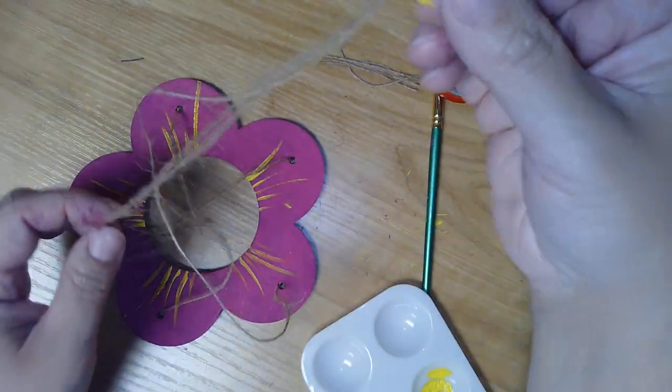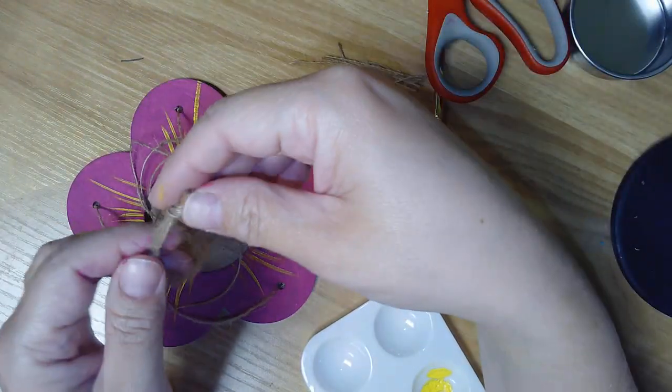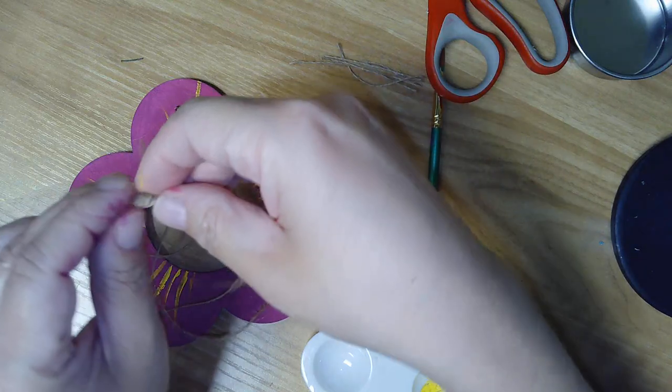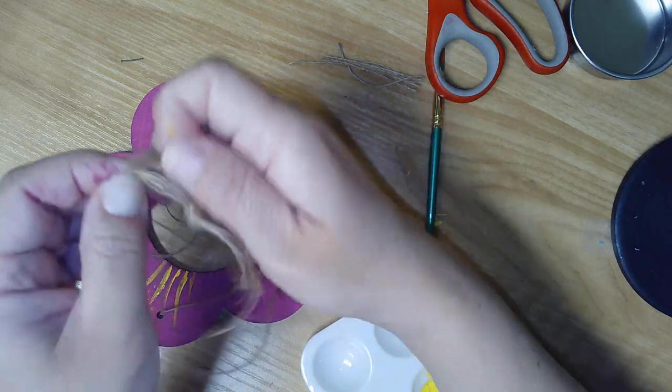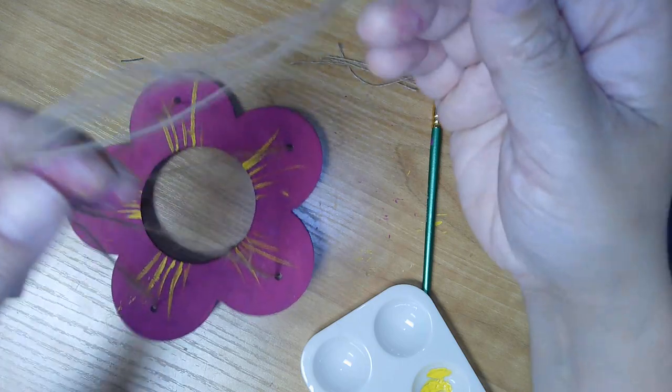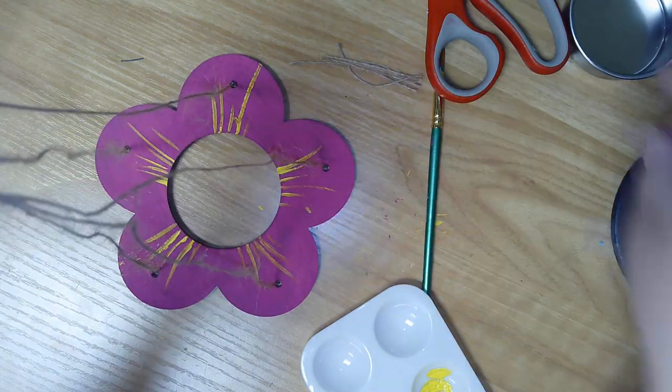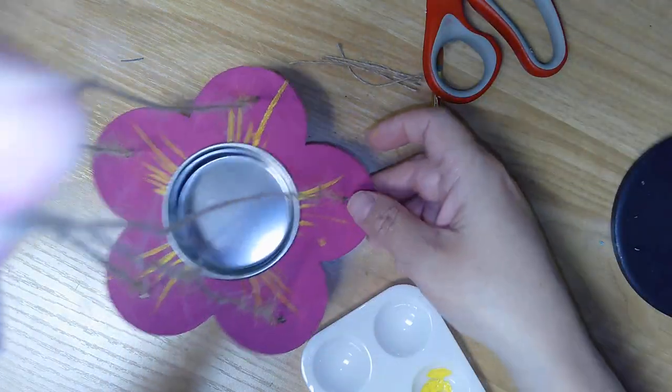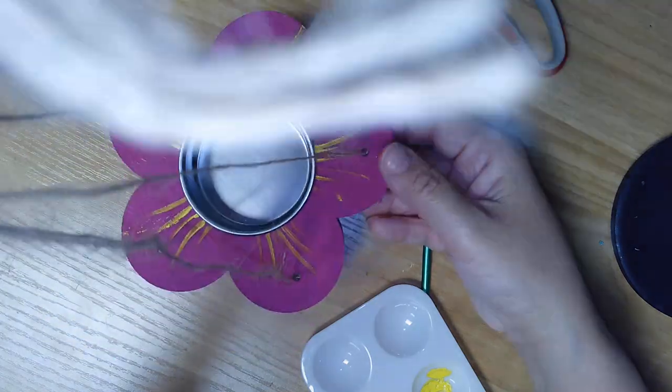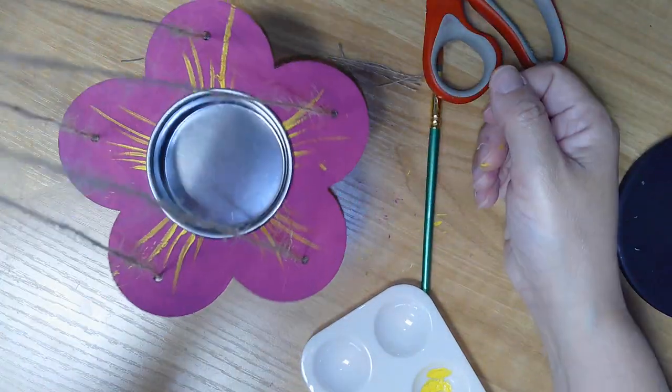It should be even. If you hang it up and notice that it's not, these knots, as long as you don't pull them too tight, shouldn't be too hard to take out and adjust as needed to make sure it's hanging evenly. Then you'll just fill that with bird seed and hopefully attract some cool birds to your yard.